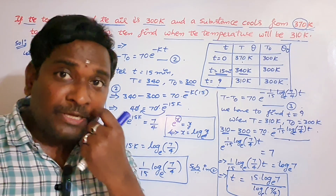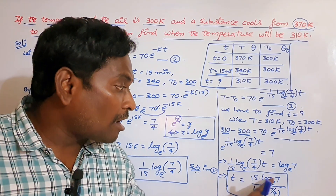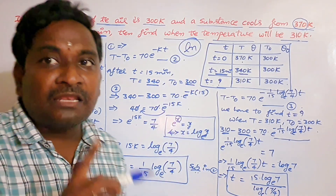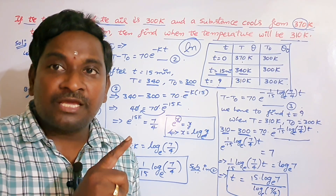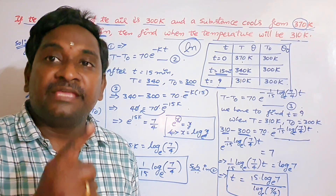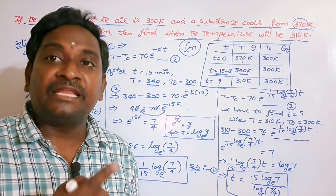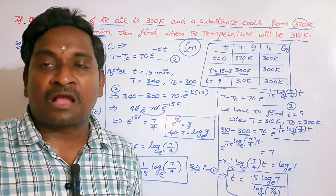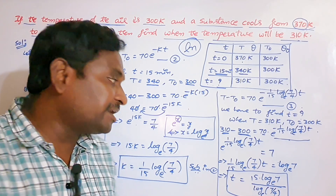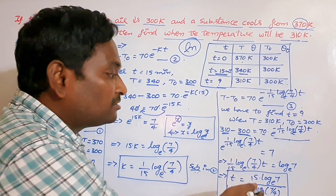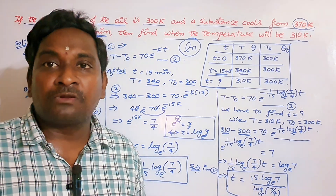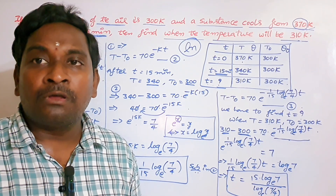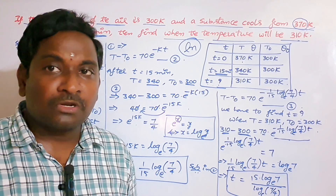In the calculator, there are two logarithmic functions: LOG and LN. LOG is base 10, and LN is the natural logarithm to the base e. Since our formula uses log to the base e, you should use LN on the calculator to compute the final answer.